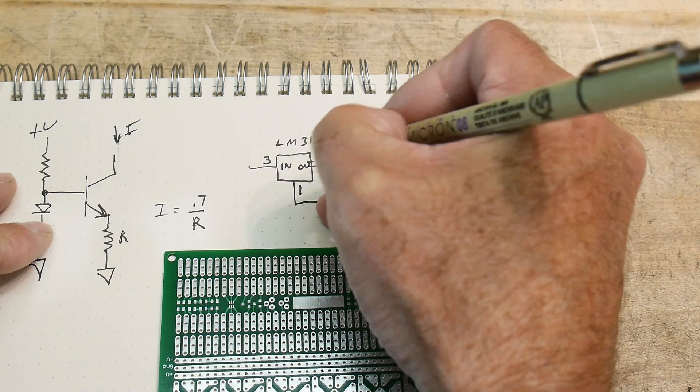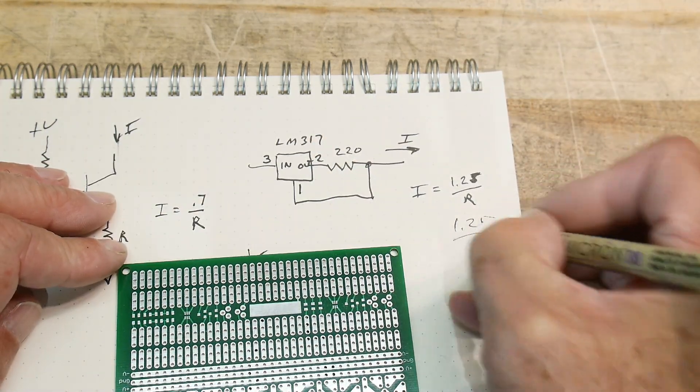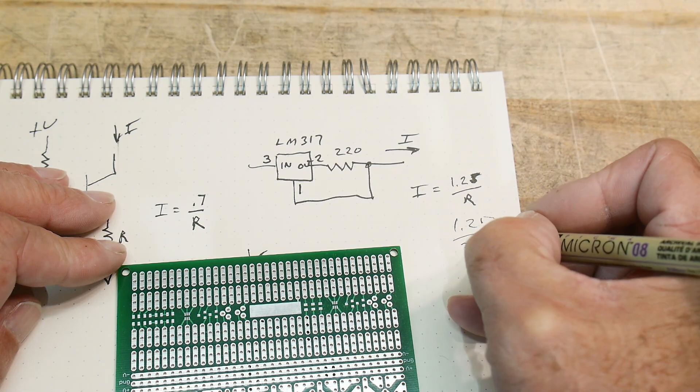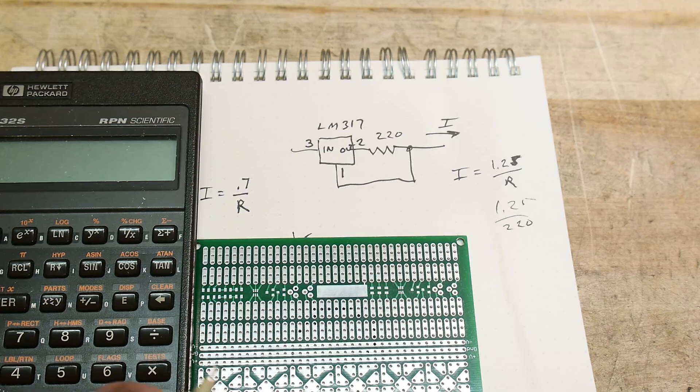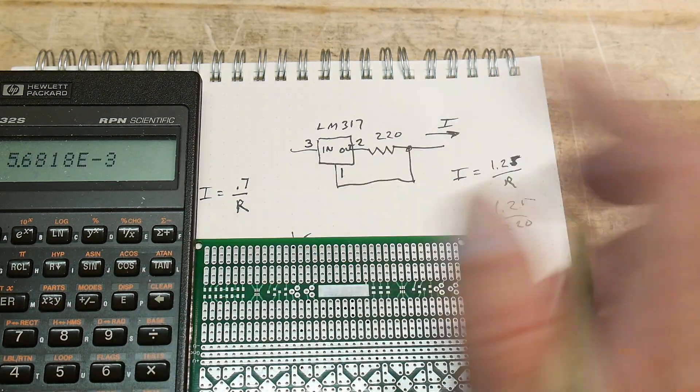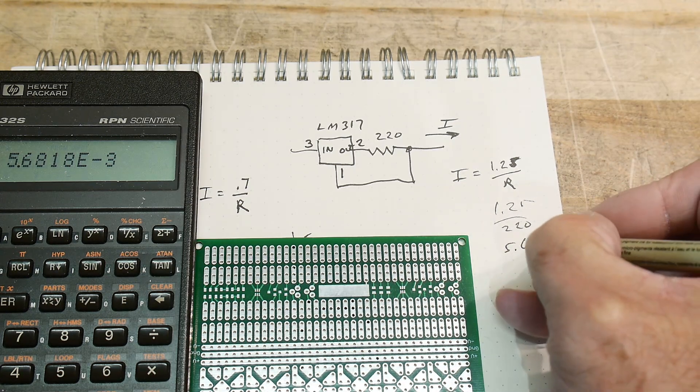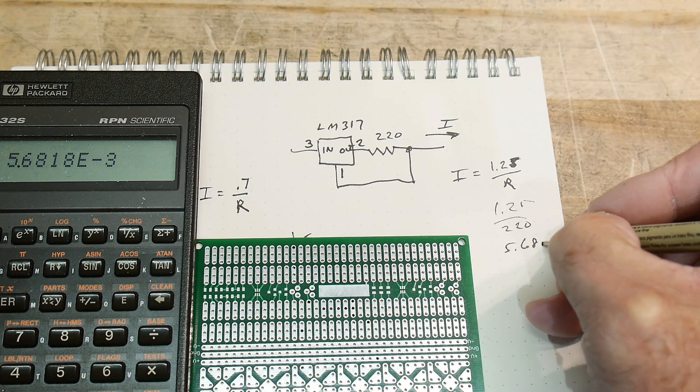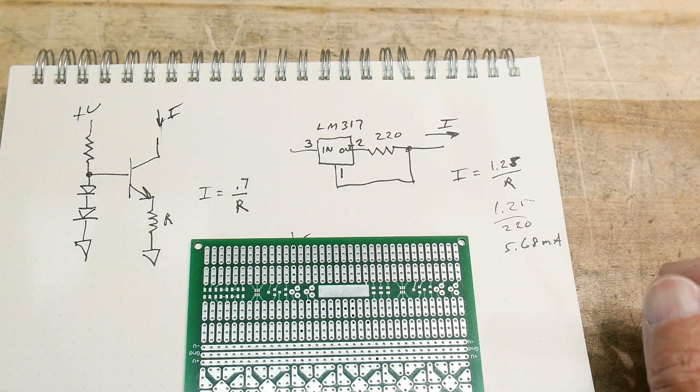I'm going to put a 220 ohm resistor in here. So we're going to have 1.25 divided by 220, and if we do the math, we're going to get about 5.68 milliamps. Okay, so let's give that a try. Let's see if that works.